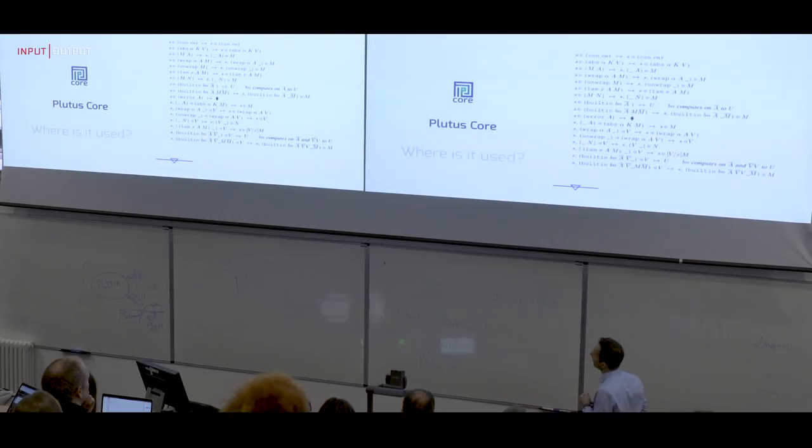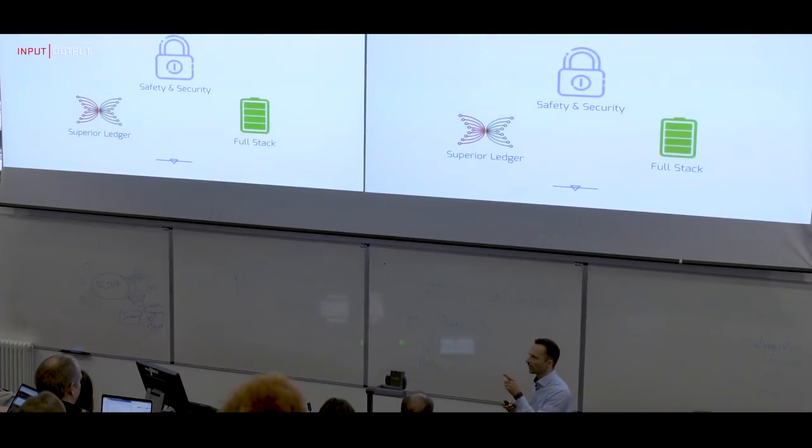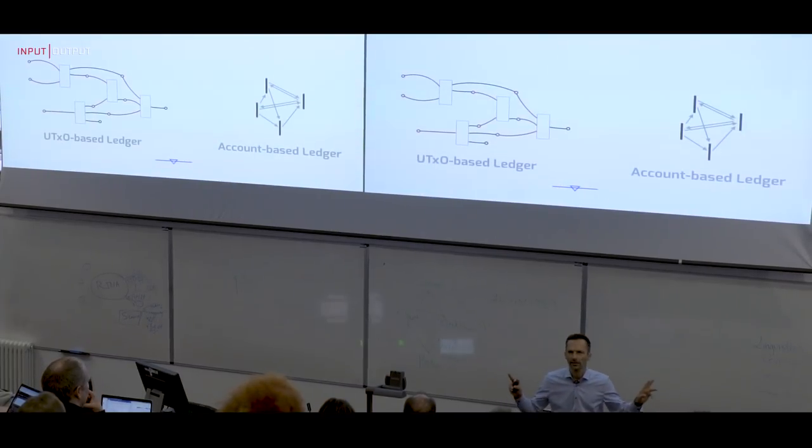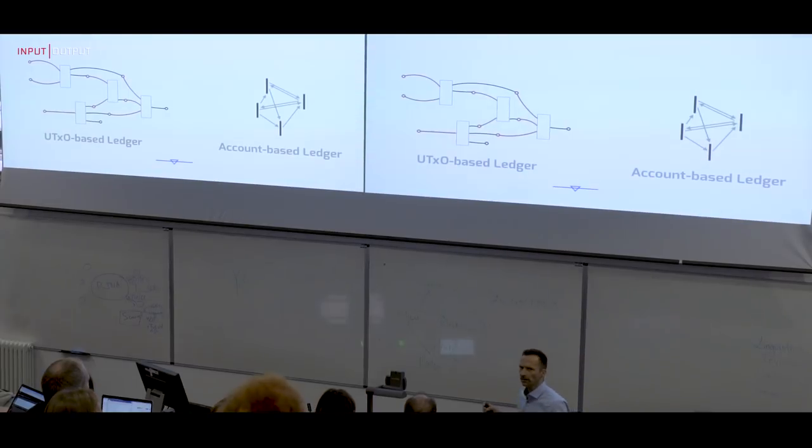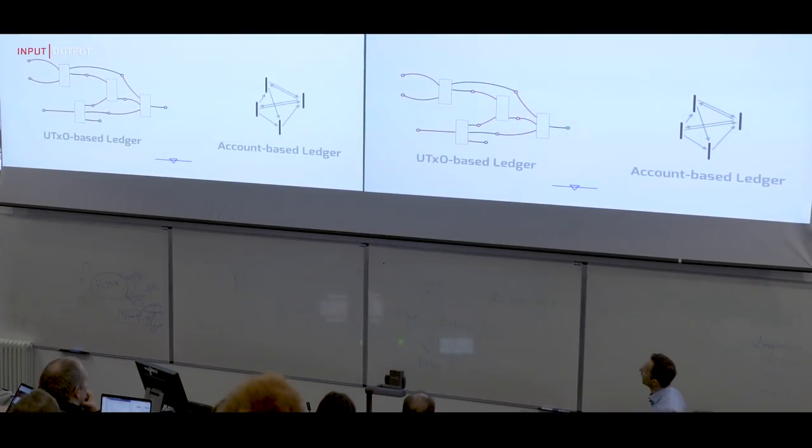So much for safety and security, but where is this Plutus Core thing used? It's used on the chain. So now this gets us to the ledger. What about the ledger? Generally speaking, there are two ledger architectures. There's the so-called UTXO unspent transaction output ledgers, like Bitcoin. And then there is account-based ledgers, like Ethereum.